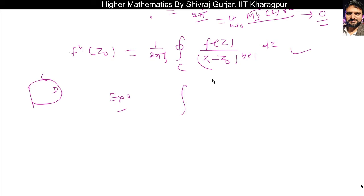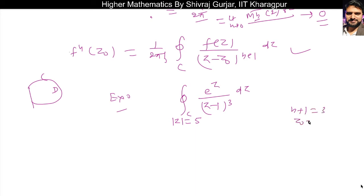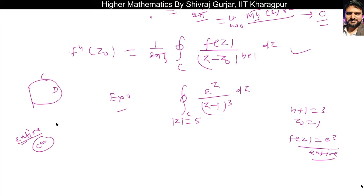Let's take an example: evaluate the integral along closed curve C of e^z divided by (z minus 1)^3 dz, where modulus of z equals 5. Comparing with the general formula, n+1 is 3 so n is 2, z-naught is 1, and f(z) is e^z. Now e^z is an entire function — meaning it is analytic in the entire finite complex plane.